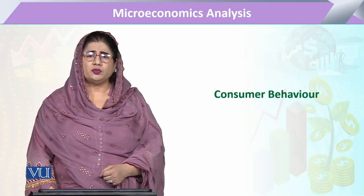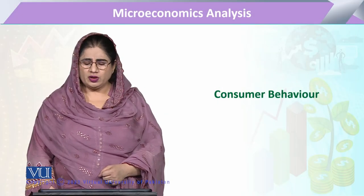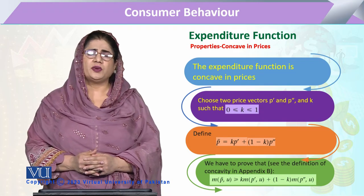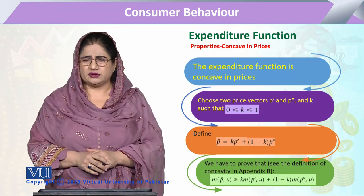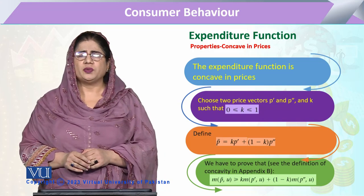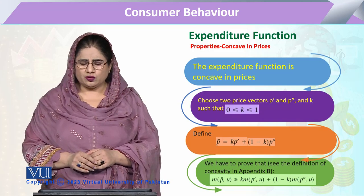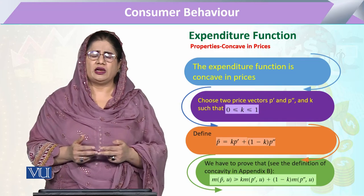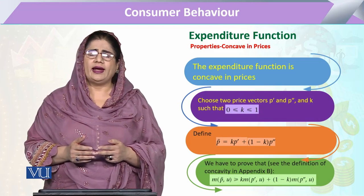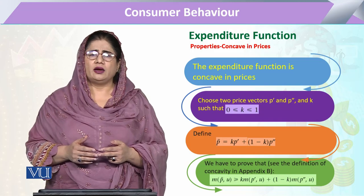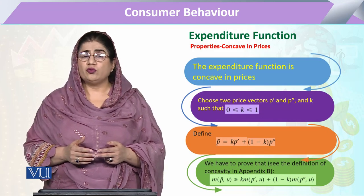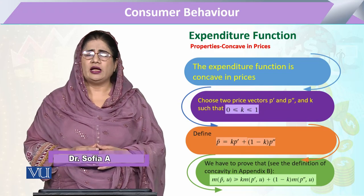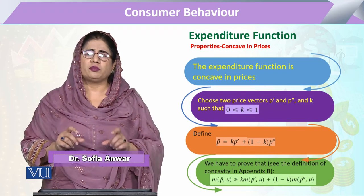Under the chapter of consumer behavior, we are going to study the various properties that an expenditure function has to exhibit. When we see the expenditure function, it will be related to two things mainly: the commodities and their quantities, and those quantities have to be purchased from the market at various prices. So definitely there will be utilization of price.